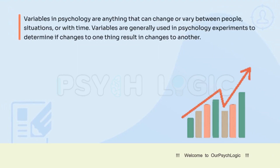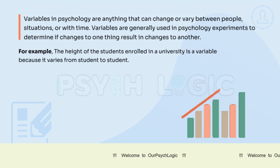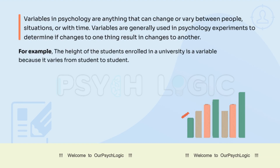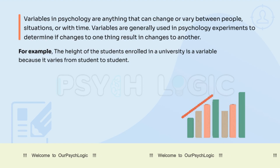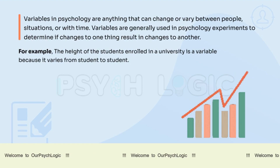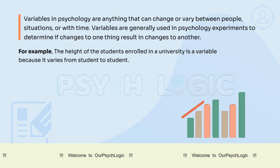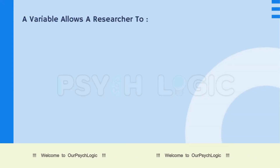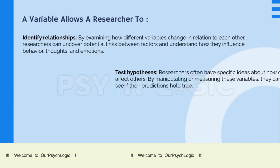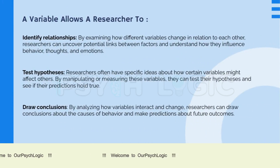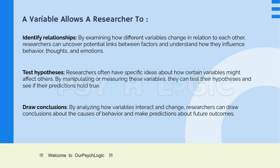So, what are variables? In psychological research, a variable is a quality or a quantity that can change over time and it varies from person to person. For example, the height of students enrolled in a university is a variable because it varies from student to student and it also has the ability to change over time. It's a key element in studies because it allows researchers to identify relationships, test hypotheses, and draw conclusions. A variable is something without which conducting research is almost next to impossible, because our research is based on variables.